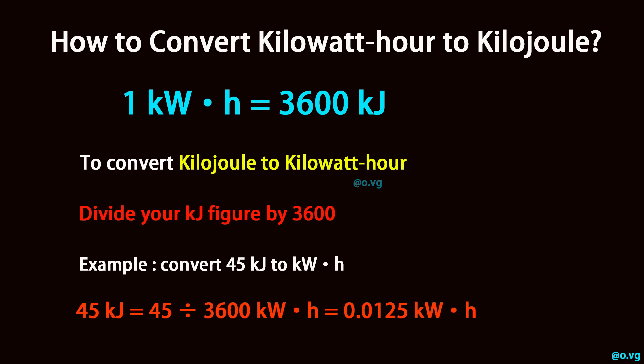Example: convert 45 kilojoule to kilowatt-hour. 45 kilojoule equals 45 divided by 3600 kilowatt-hour, which equals 0.0125 kilowatt-hour.